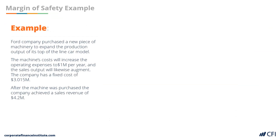Let's look at an example of calculating margin of safety. Ford company purchased a new piece of machinery. The machine's costs will increase the operating expenses to $1 million per year and the sales output will also change. The company has fixed costs of $3.015 million. After the machine was purchased, the company achieved a sales revenue of $4.2 million.